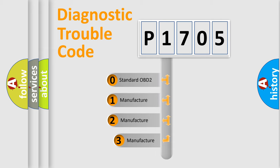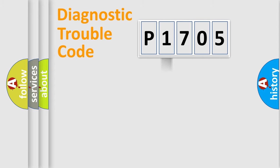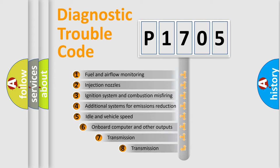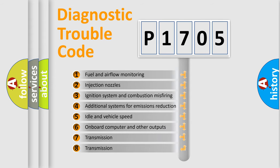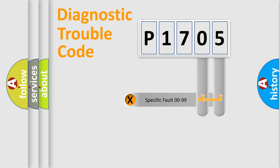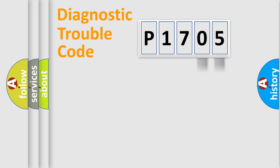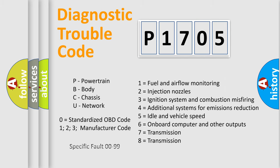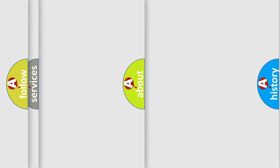If the second character is expressed as zero, it is a standardized error. In the case of numbers 1, 2, or 3, it is a more specific expression of a car-specific error. The third character specifies a subset of errors. This distribution is valid only for the standardized DTC code, and only the last two characters define the specific fault of the group.